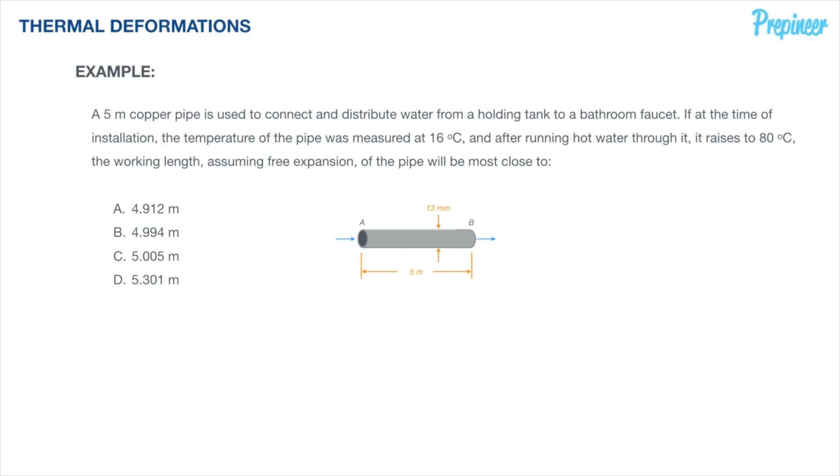In this problem we have a few new terms that are presented to us and we are told that we have a pipe that is installed originally at some initial length but that it has a working length which is what we are asked to define. This tells us that to some degree the length of the pipe will be changing or deforming when we put it into operation.